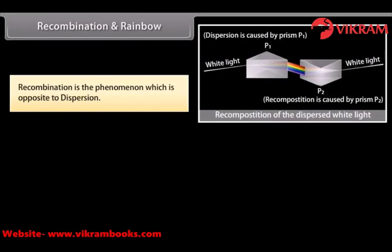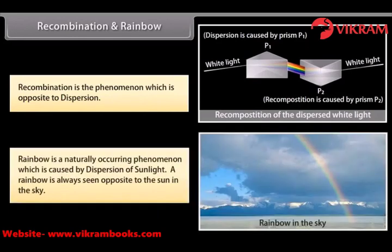Isaac Newton observed that if he keeps two glass prisms parallel to each other such that one is inverted with respect to the other, then white light entering one prism gets split into seven colors which, when they fall on the other prism, recombine to give white light again. This is termed as recombination. A rainbow is a natural phenomenon which occurs as a result of dispersion. A rainbow is always seen opposite to the sun in the sky. During rain, water drops act as prisms for sunlight — they refract, disperse, and then internally reflect the sunlight to give the rainbow.